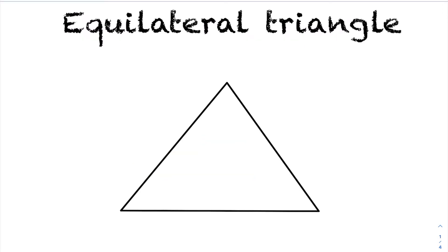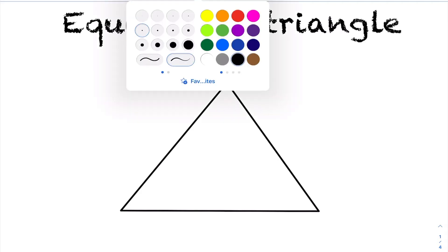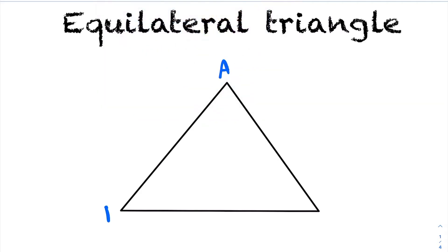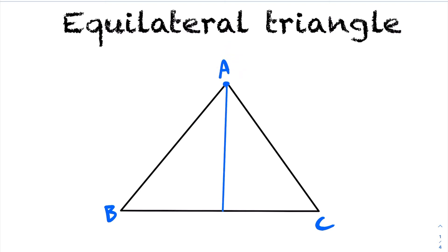What would the Euler line look like if we had an equilateral triangle? If you have an equilateral triangle with vertices A, B, C, and you calculate the altitude line from vertex A — it goes from vertex A down to the opposite side at 90 degrees — because this is an equilateral triangle, this is going to meet the opposite side at the midpoint. So this is an altitude line, and it is also a median line, because it goes from vertex A to the opposite side at the midpoint.